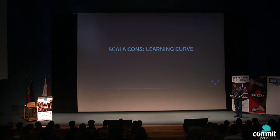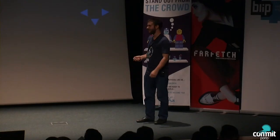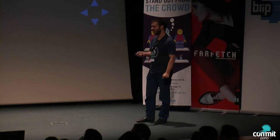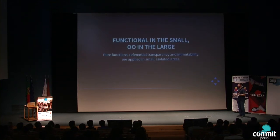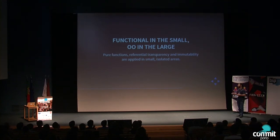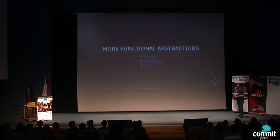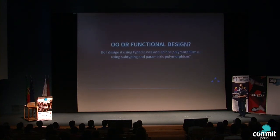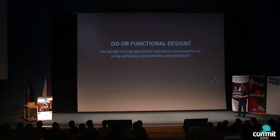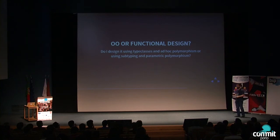One Scala con, as you've probably witnessed, is the learning curve. It's not an easy language — it's quick to start using, but hard to master. People coming from an object-oriented background can quickly start writing OO code in Scala, then gradually apply functional programming to isolated parts of the codebase. A question that usually arises is whether to use object-oriented or functional design, and this also makes part of the learning process.